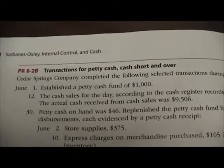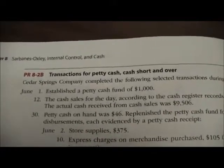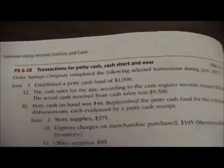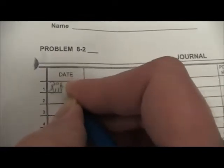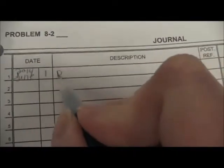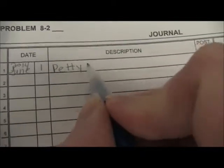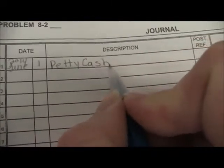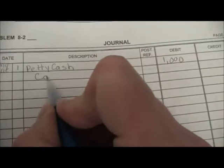On June 1st, he established a petty cash fund for $1,000. So we go into our journal. Our date is June 1st, 2014. We're establishing a petty cash fund, so we're going to debit petty cash for $1,000. We're taking the money out of our cash account, so we're going to credit cash for $1,000.